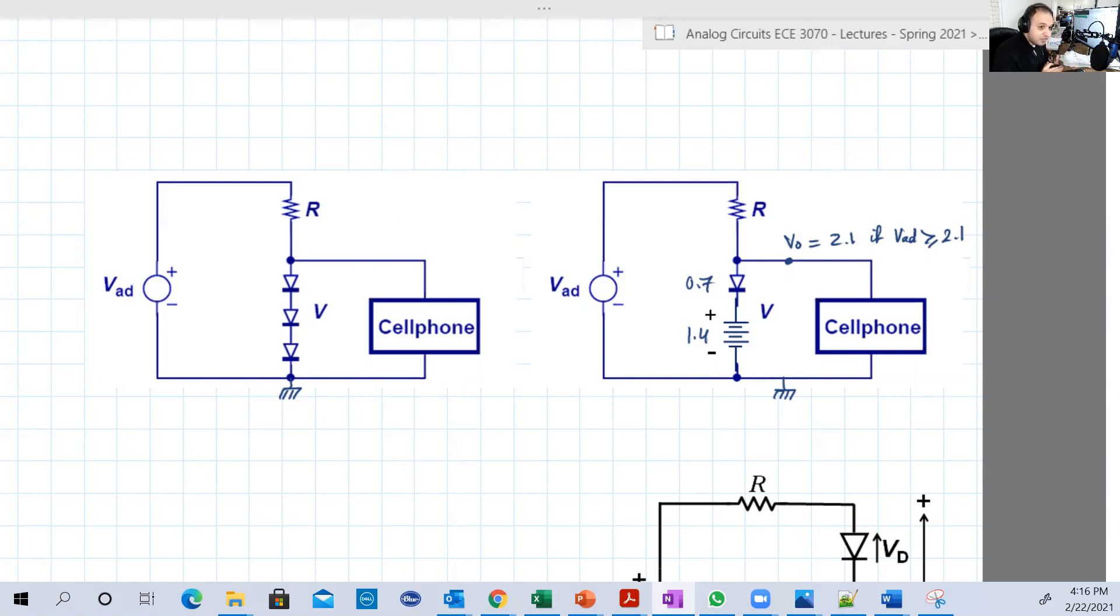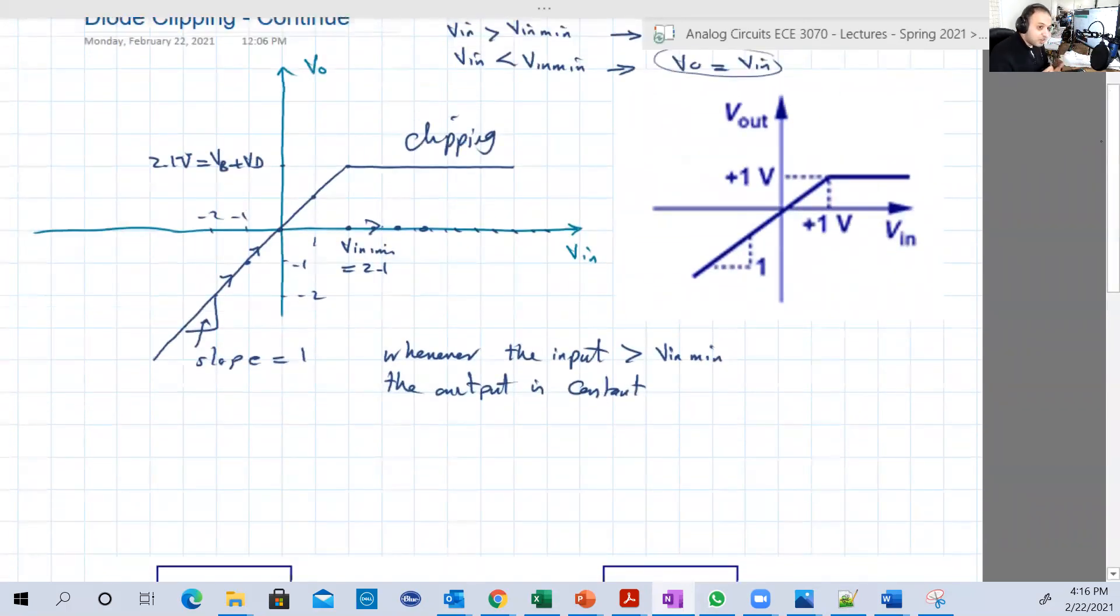So remember that last time we saw that whenever the input is less than V_input minimum, or V_input 2.1, or V_B plus V_D on, V_out is equal to V_input for our circuit, the clipping circuit. And whenever V_input exceeds V_input minimum, it becomes greater than or equal to 2.1, V_out will be 2.1 constant.